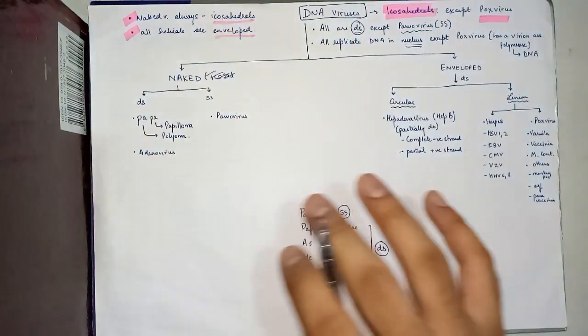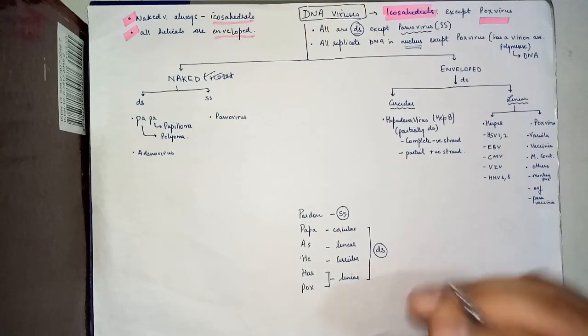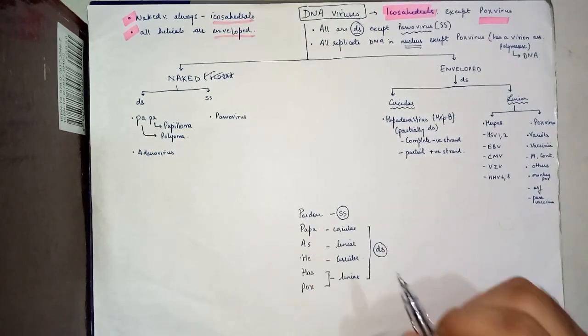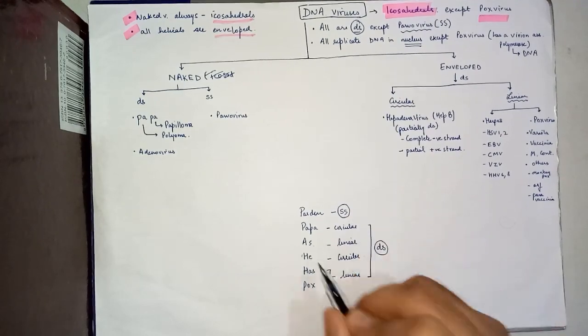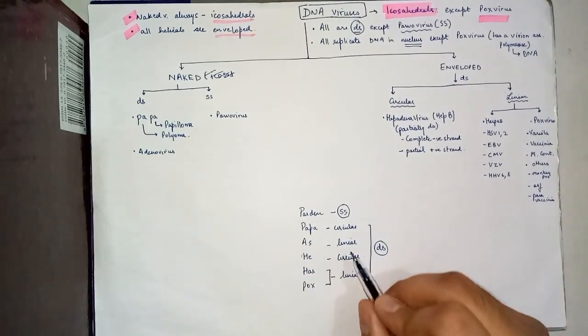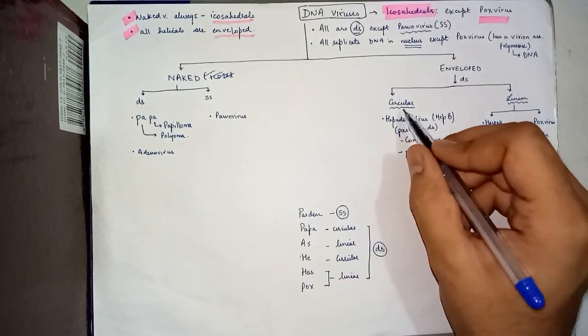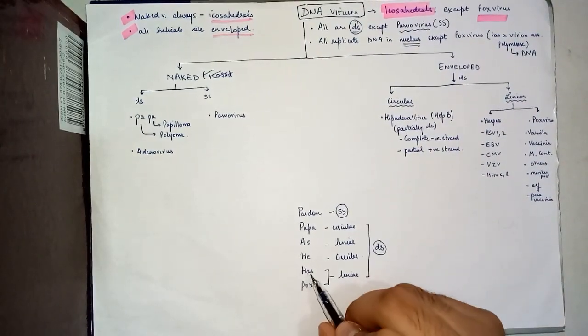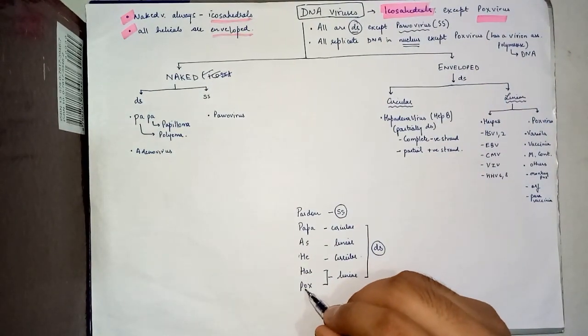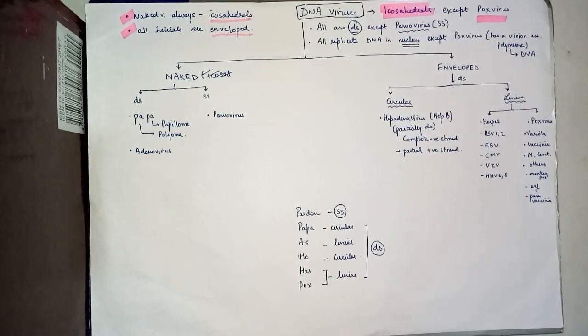This is basically the DNA virus classification. One of the mnemonics that we have to memorize the DNA strand orientation is 'Pardon Papa as He has Pox.' Pardon is for parvovirus, which is the only single stranded DNA virus. Papa is papilloma and polyoma, which is circular. As is adenovirus, which has linear double stranded DNA. He becomes hepatitis B, which has a circular enveloped double stranded DNA virus. Has becomes herpes virus, which is a linear envelope DNA virus, and last we have pox virus, which is also a linear double stranded DNA virus. Now we'll move on to RNA viruses.